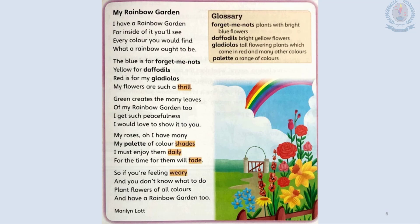Now turn to page number 71 in your textbook. Here you are given another poem about the rainbow. Let's read it: 'My Rainbow Garden.' I have a rainbow garden, for inside of it you will see every color you would find, what a rainbow ought to be. The poet says she has a very colorful garden — actually it looks like a rainbow garden. If you go inside that garden you will see each and every color.